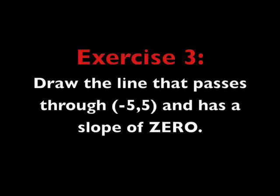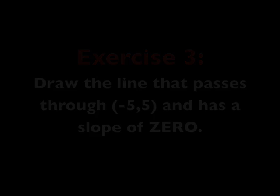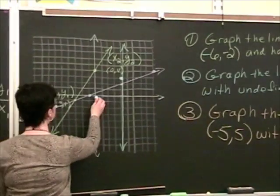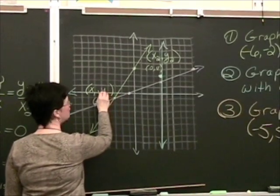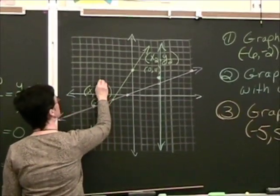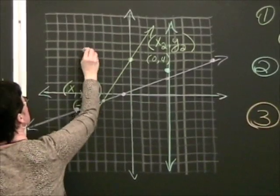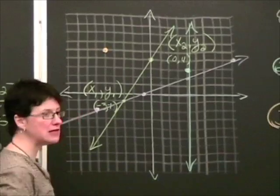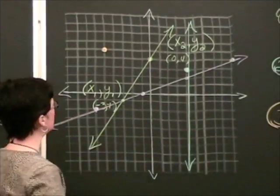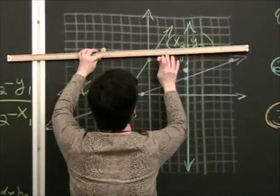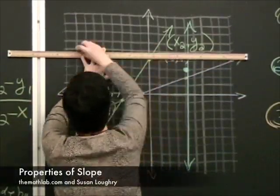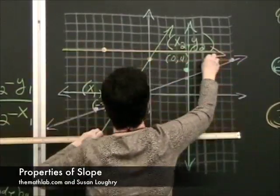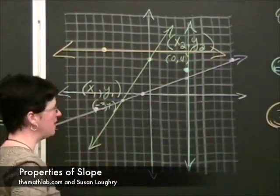Exercise number 3. Draw the line that passes through negative 5, 5 and has a slope of 0. So we'll go over here to negative 5, 2, 3, 4, 5. Negative 5 and then up 5. So that will be our starting point. If it has a 0 slope, that means it's flat lined. It's a horizontal line that passes through this point. Alright, there you have it.